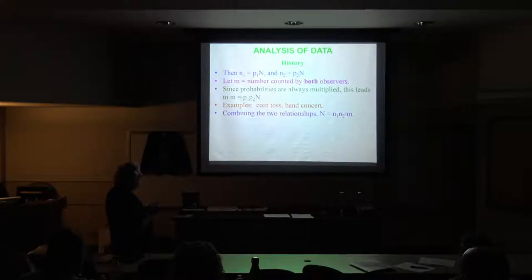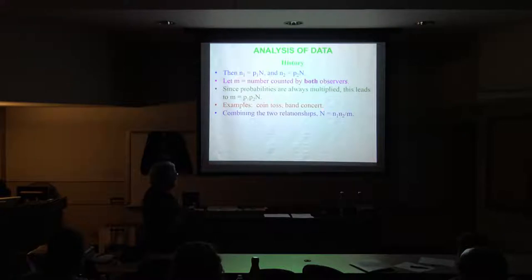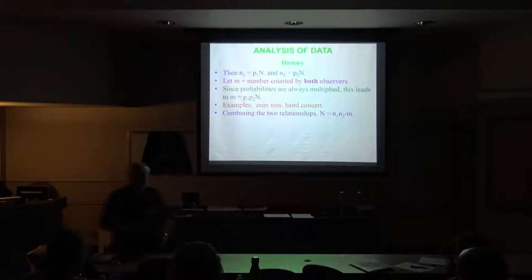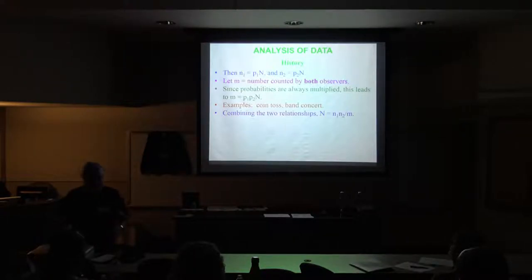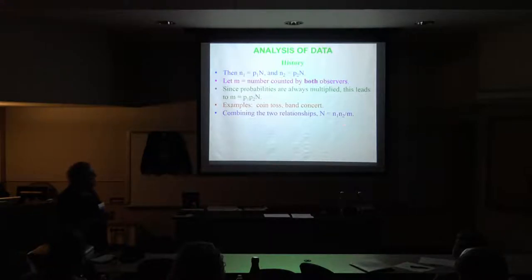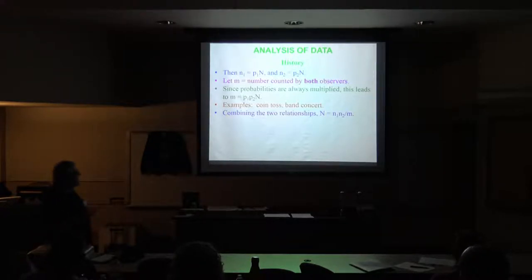If you put those two relationships together, you find that the number actually there is the number each one sees multiplied together, divided by the number they both see together. That's what he came up with while in college: two people count meteors, keep track of how many each one sees individually and how many they saw together, and the relationship is just those two individual counts multiplied and divided by the number seen in common — giving the number that nobody saw but were there.